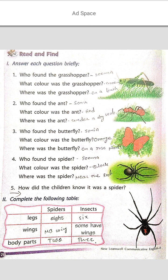Question number four: who found the spider? Sima found the spider. What color was the spider? Black color. Where was the spider? Near the roof. Note down in your textbook quickly — pause the video, note down in your textbook, and then note down in your copy notebook.